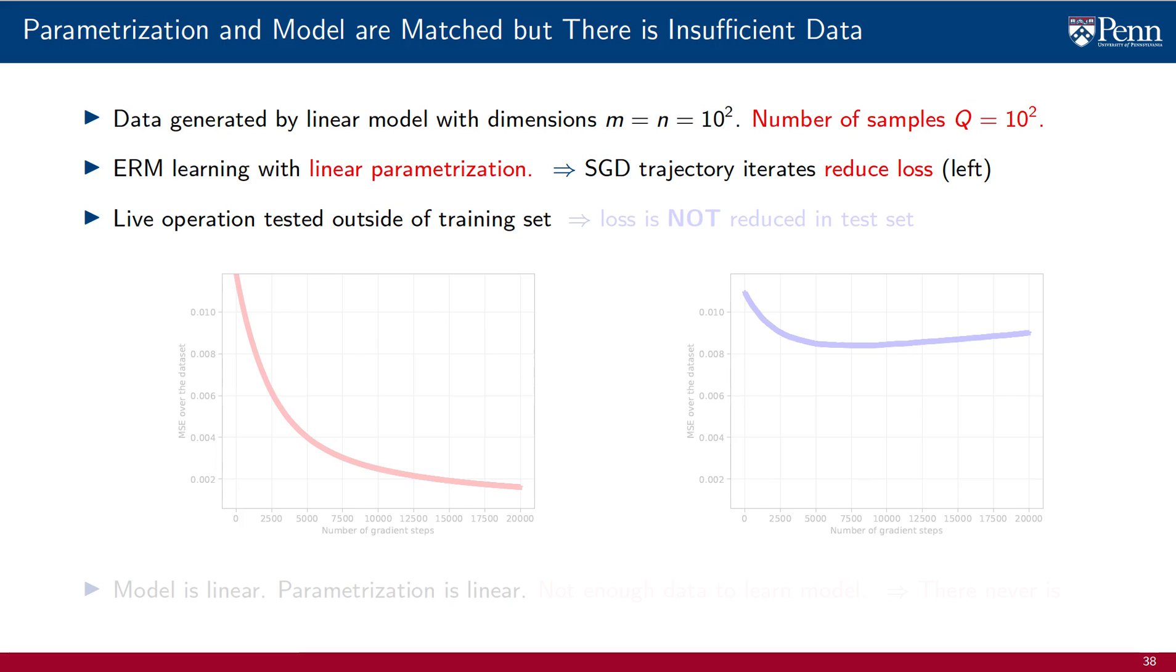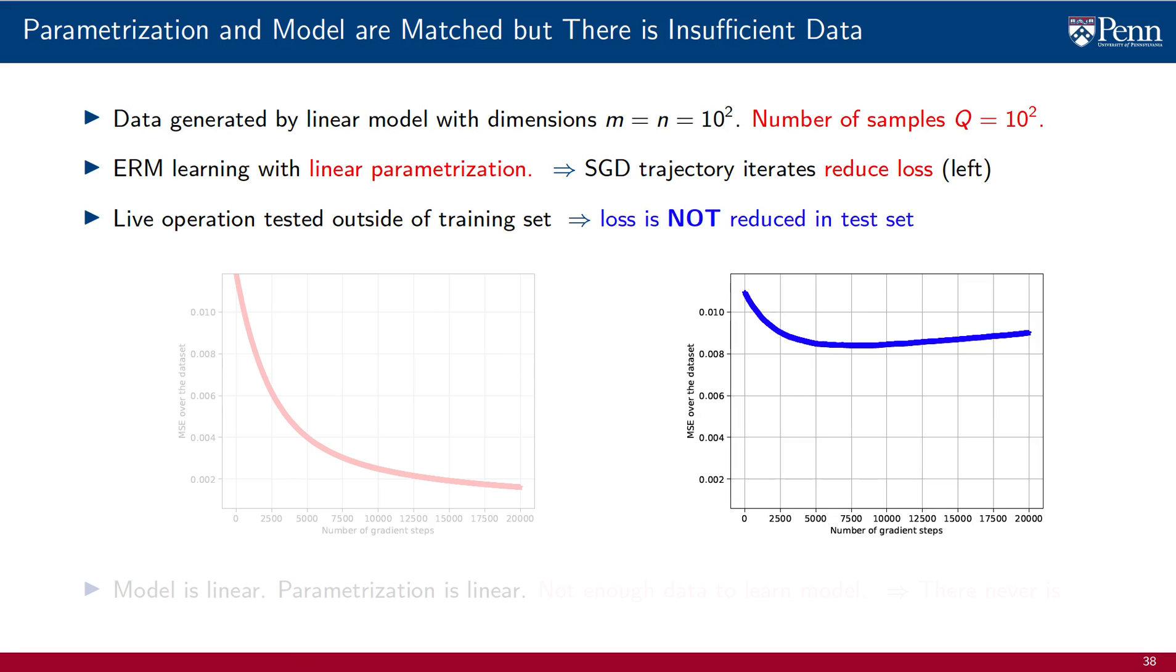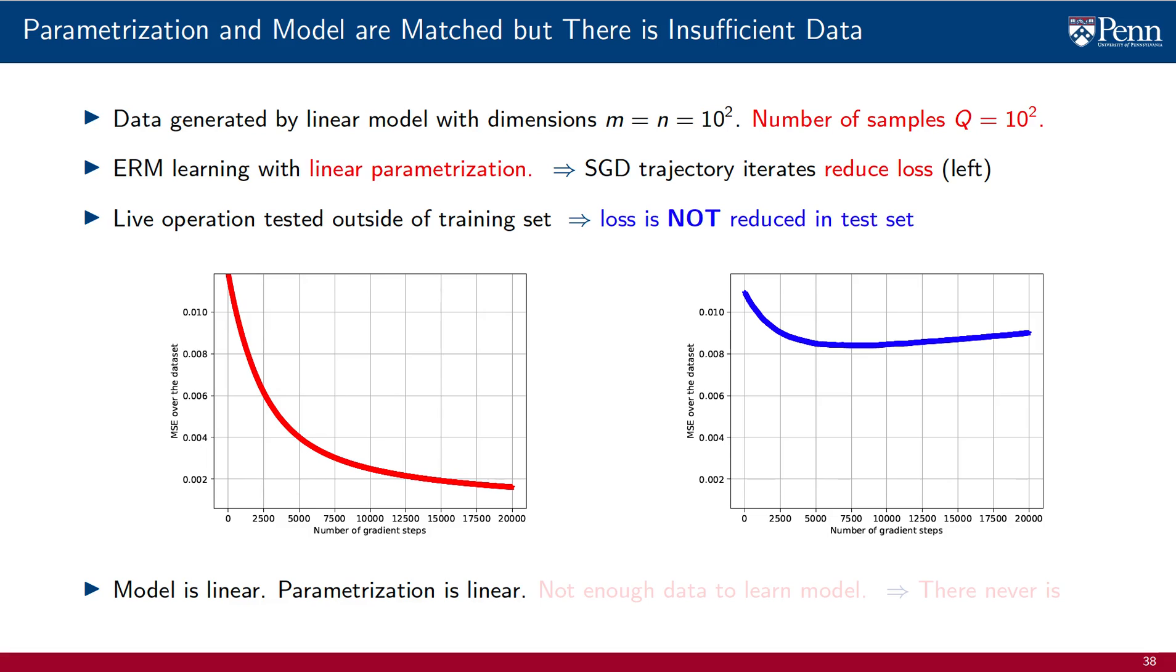But when we operate outside of the training set during live operation, the loss is not reduced by much. We are failing to learn to operate outside the training set. In this case, there is a little bit of a mystery. The model is linear and the parametrization is linear. So how come we are not learning the model?